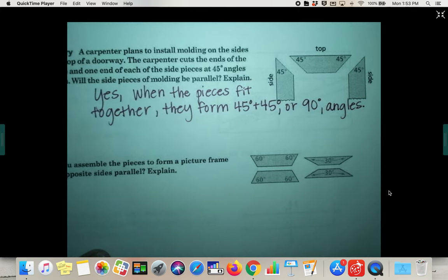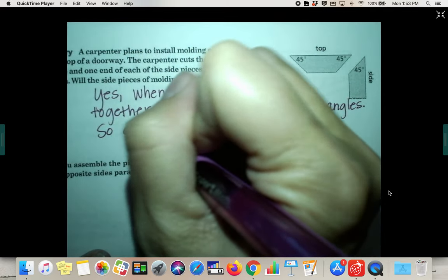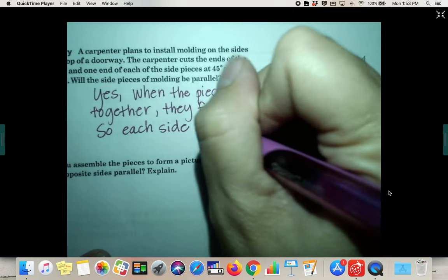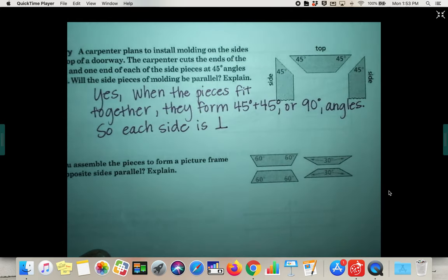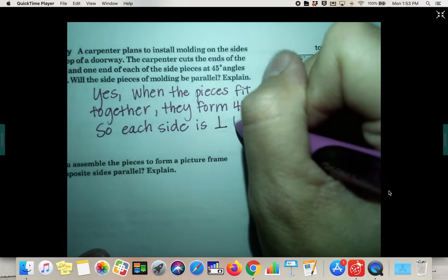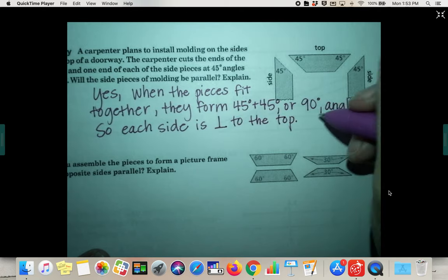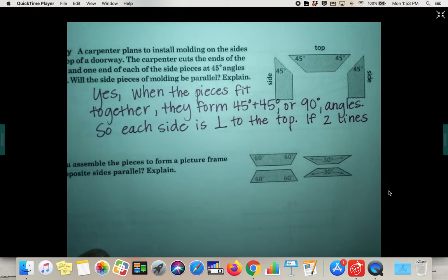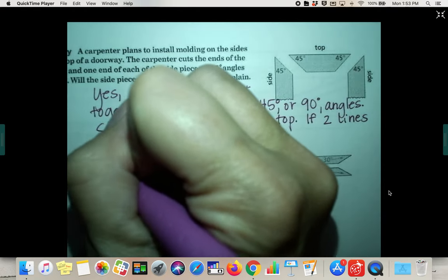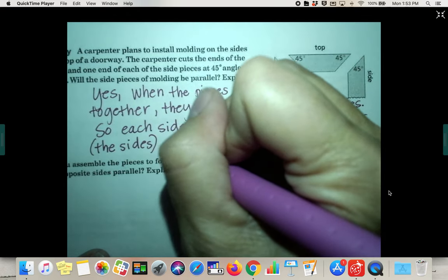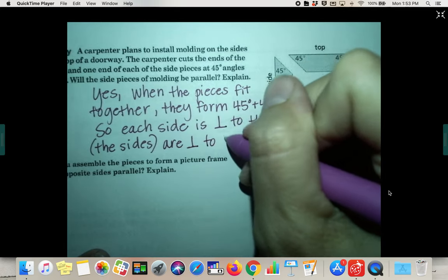So each side is perpendicular—I'm going to use this symbol for perpendicular, it's like an upside-down capital T—to the top. And then we know from our theorem that if two lines, which would be the sides, the sides are perpendicular to the same line,